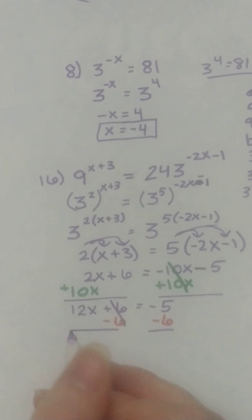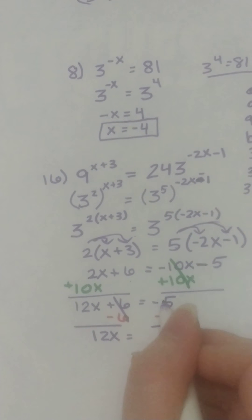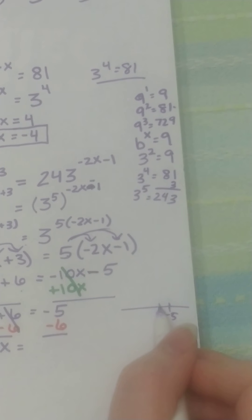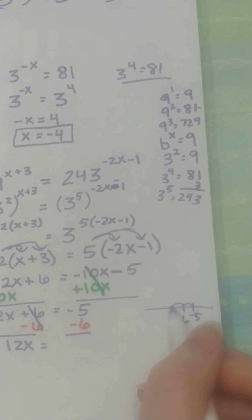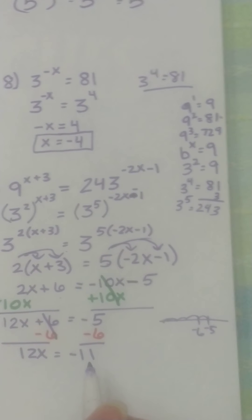That cancels. We got 12x. Negative 5 minus 6. So on the number line you're at negative 5, and minus 6 means you're going 6 back more into the negative. So it's going to be negative 11.